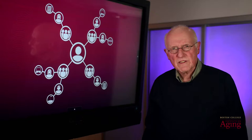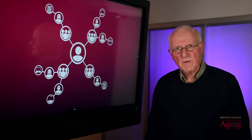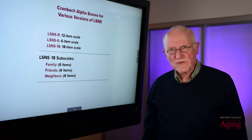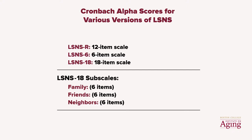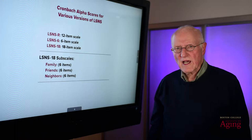You can find it on our website, and there will be a link on the credits for this program. In 2003, we published a revised 12-item version of the LSNS that we labeled the LSNS-R. We also developed a six-item abbreviated version that we labeled LSNS-6. In this talk, I will use the LSNS-6 to illustrate measurement aspects of social isolation.